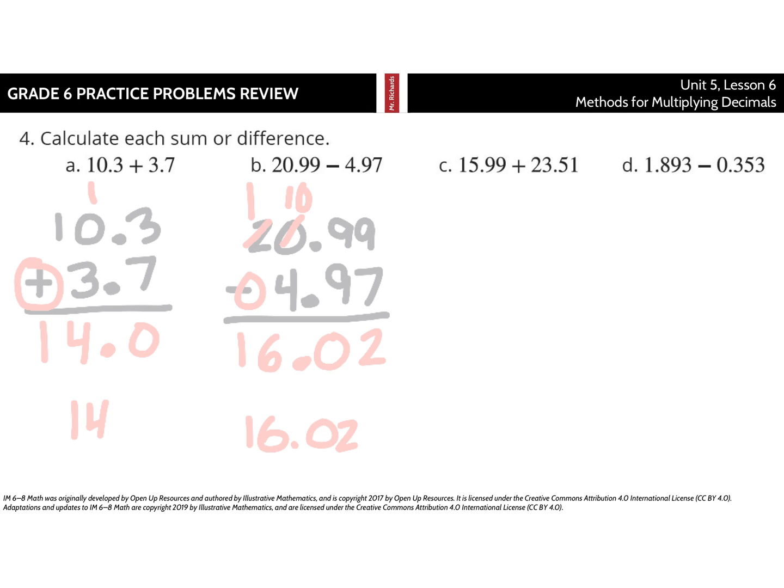As we continue going, 15.99 plus 23.51. Recognize addition. 9 hundredths plus 1 hundredths is 10 hundredths. 1 plus 9 plus 5 is 15 tenths. 1 plus 5 plus 3 is 9. 1 plus 2 is 3. So, we end up with 39.50, or simply 39.5.